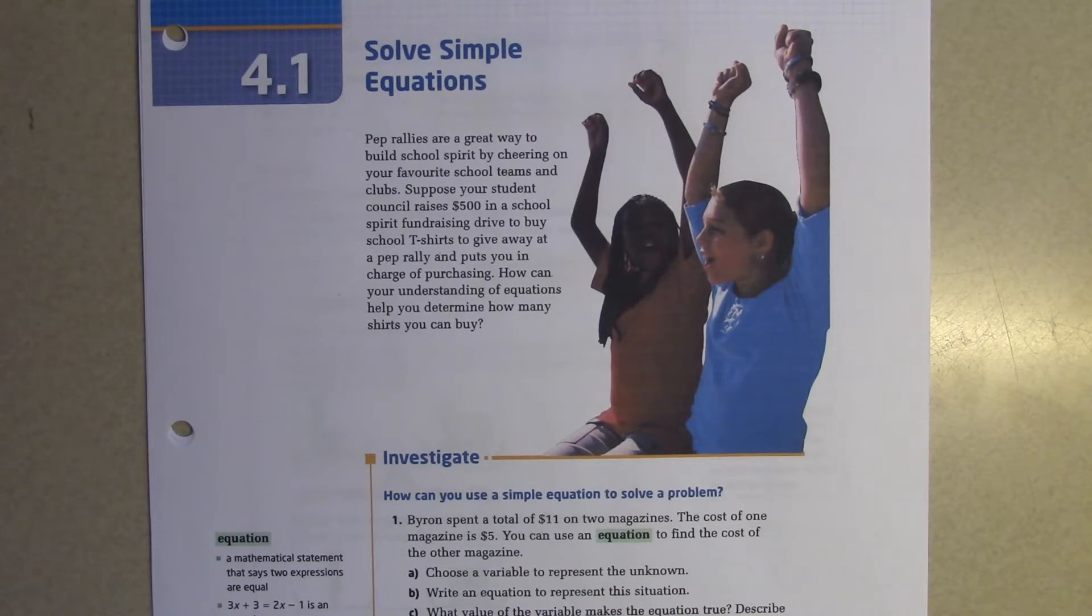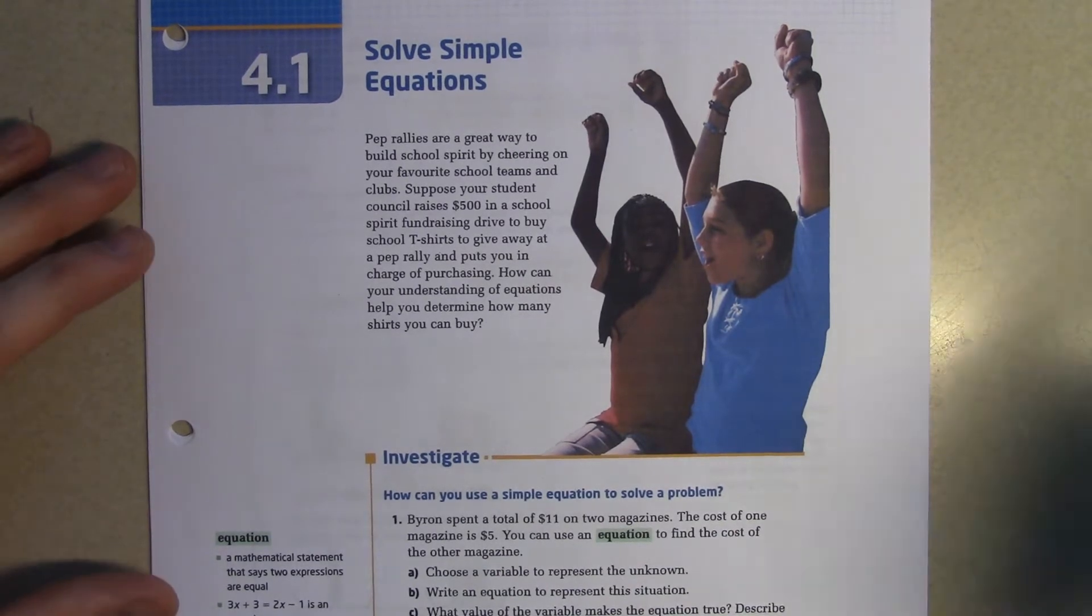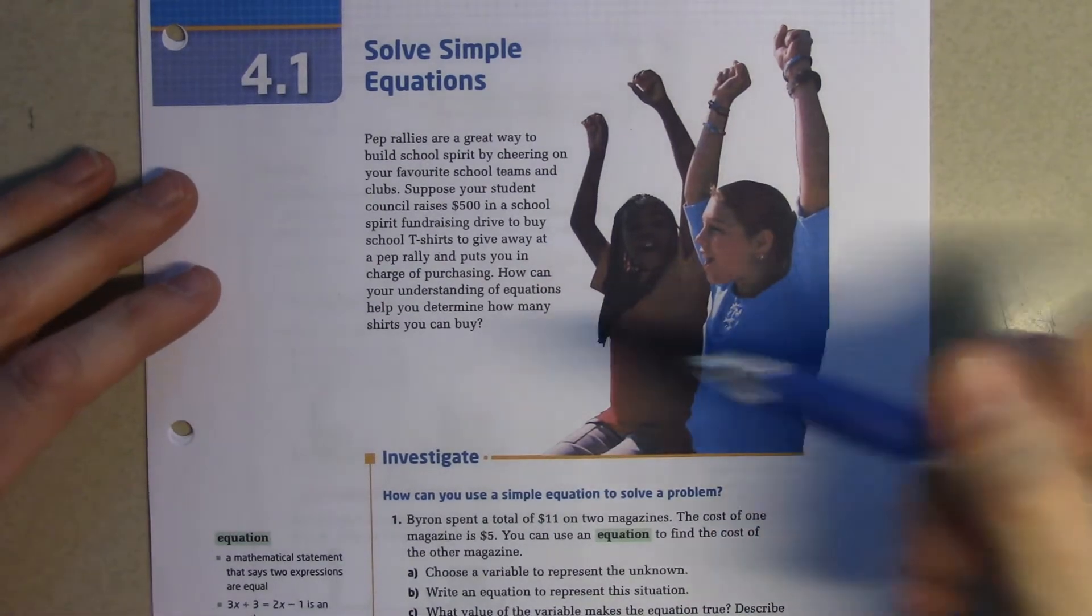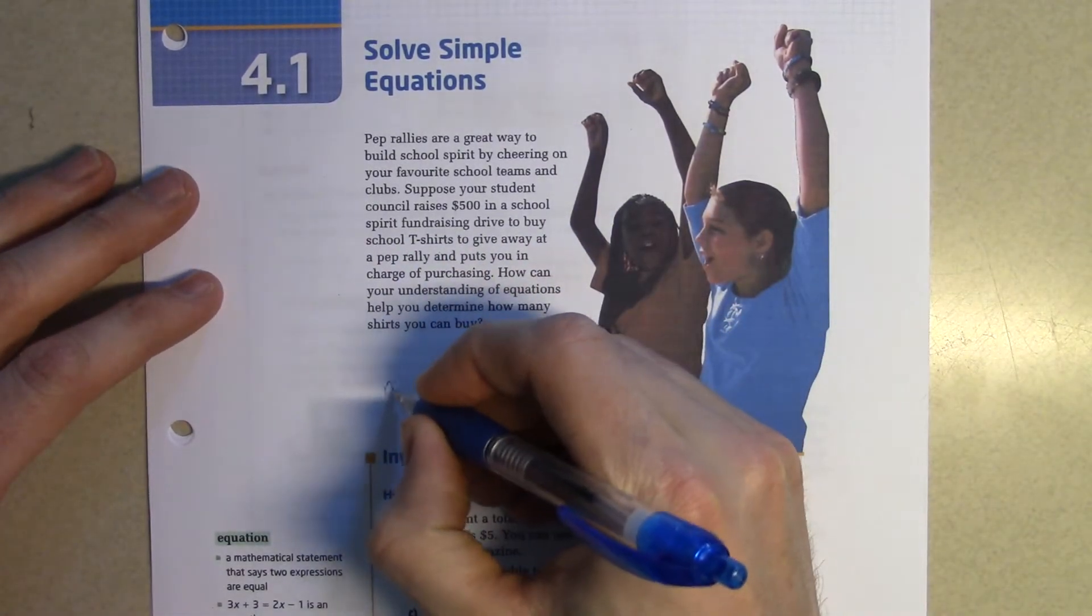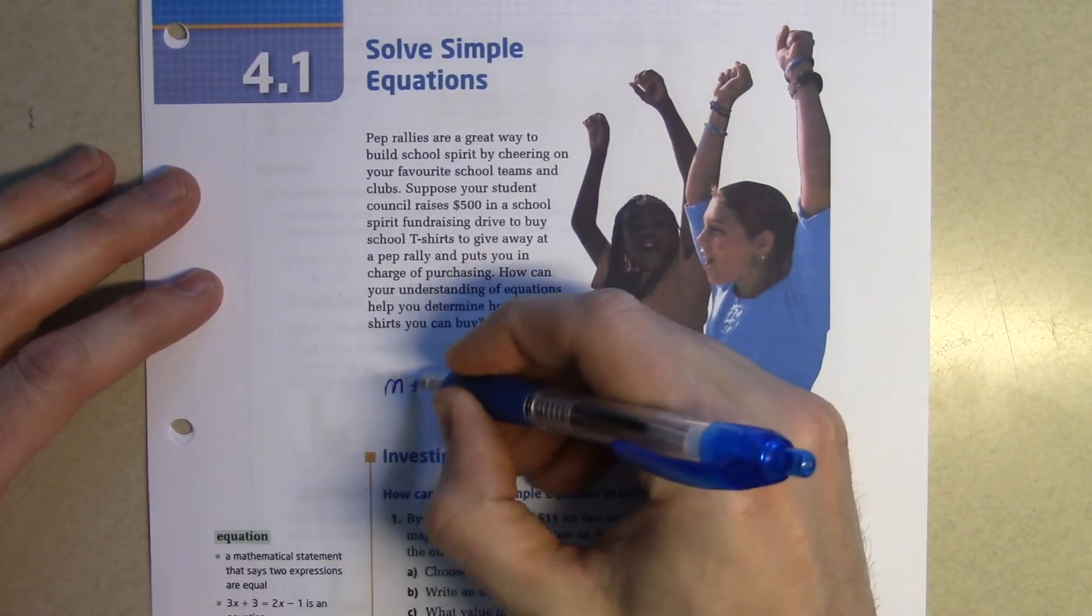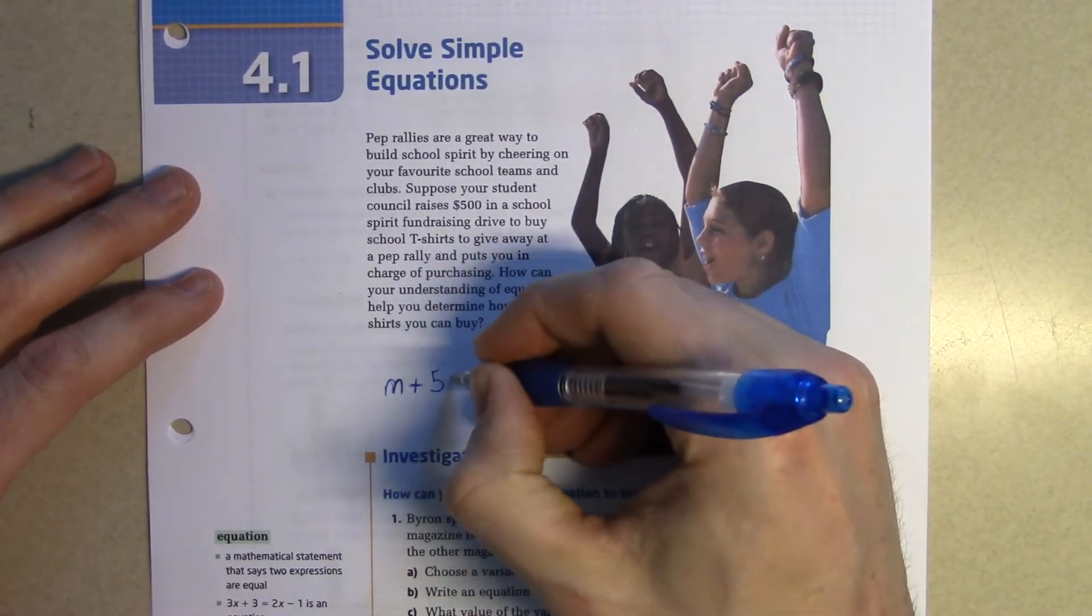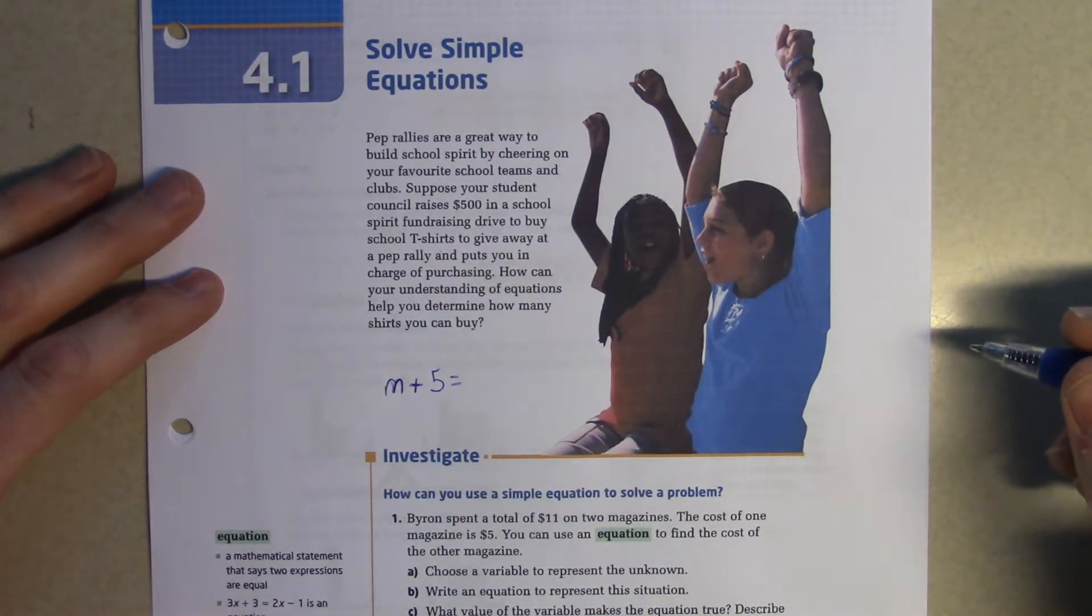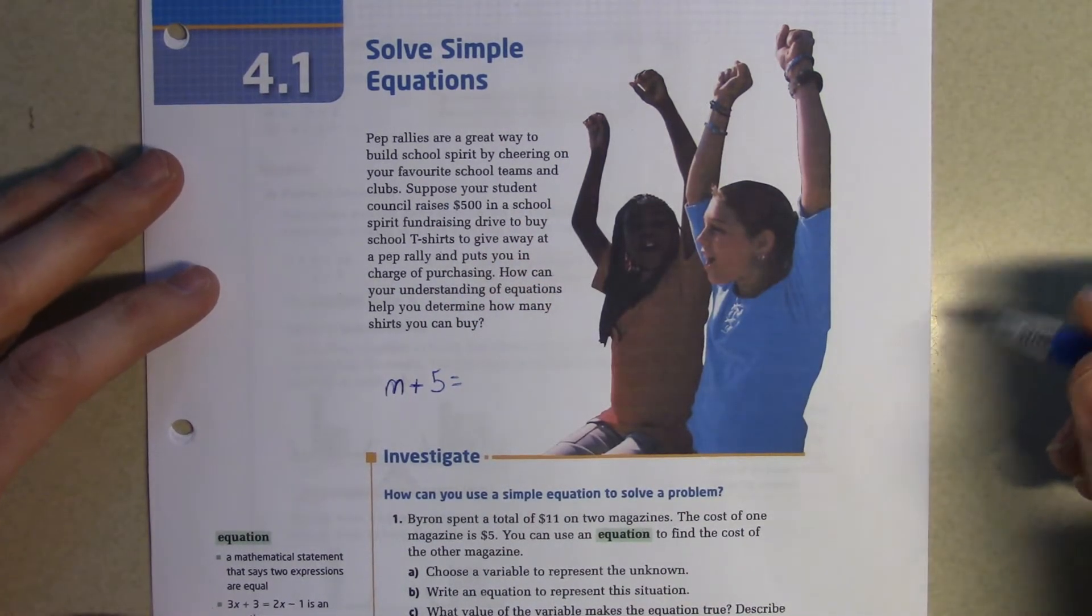The first part of the investigate says how can you use a simple equation to solve a problem. Byron spent a total of $11 on two magazines. The cost of one magazine is $5. You can use an equation to find the cost of the other magazine. So our first magazine represents M plus our second magazine which we know is $5, it's going to be equal to 11 dollars.